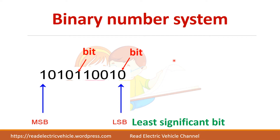For example, if you have 1000 rupees and change to 1001, it is not going to make much difference. Instead, if you go from 1000 to 900, it has a huge difference. So the left-side part is called the most significant bit because it has more value compared to the least significant bit.